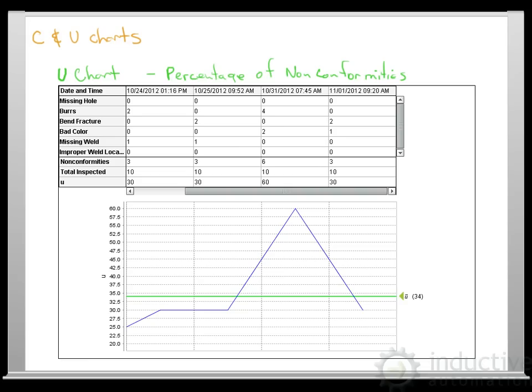We have percentage here. This percentage or our U is equal to a percentage, which is calculated by taking the nonconformities divided by total inspected. We get that 0.30 there. That's plotted here. Six out of 10 here gives us 60% there.